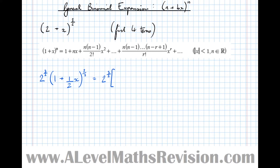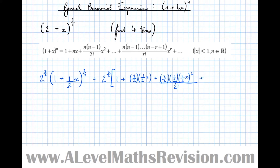So now we can expand it. It's 2 to the power of 3/2 times, and now we can use the formula with a 1 at the front. This bracket expands to: 1 + n·(x term) + n(n−1)·(x term)² / 2! + n(n−1)(n−2)·(x term)³ / 3!, and so on.